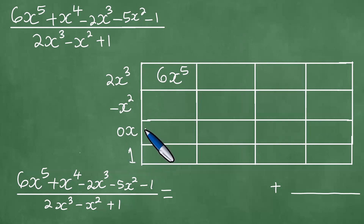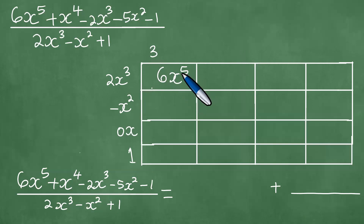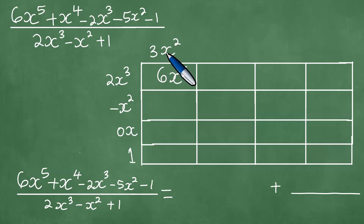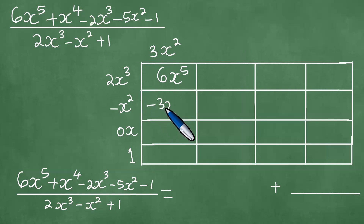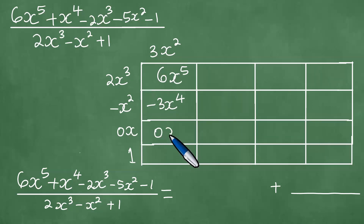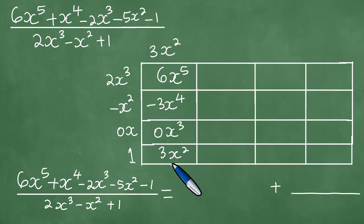What do we divide? 6x to the fifth power — we divide it by 2. 6 divided by 2 is 3. And x to the fifth power divided by x cubed is x squared. If you multiply 2 times 3, it's 6, and x cubed by x squared is x to the fifth power. We then multiply: minus x squared by 3x squared gives minus 3x to the fourth power; 0x by 3x squared gives 0x cubed; and 1 by 3x squared gives 3x squared.